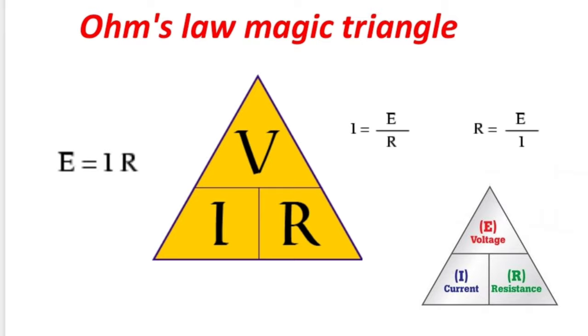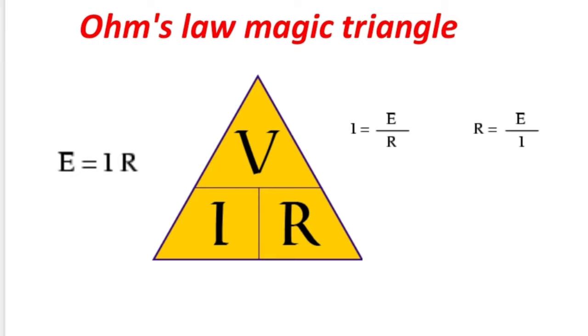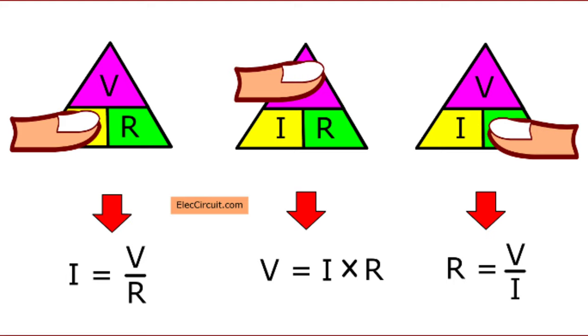Like any other equation, Ohm's Law also has a magic triangle with V, I, and R, giving us three equations. To find voltage, simply multiply current by resistance: V = I × R. To find resistance, divide voltage by current: R = V / I. To find current, divide voltage by resistance: I = V / R. That is the magic triangle.